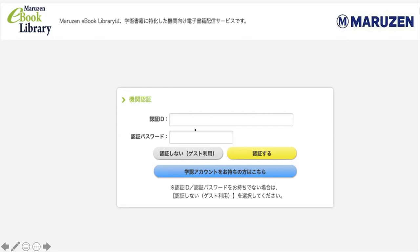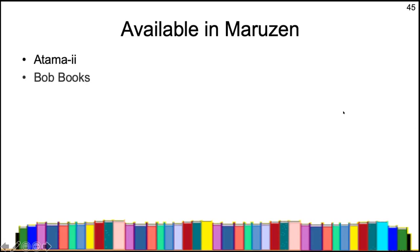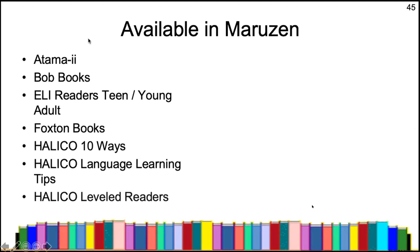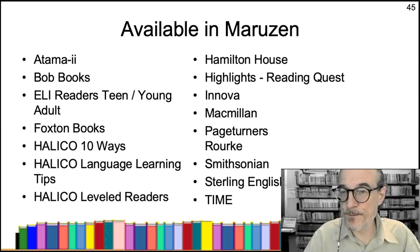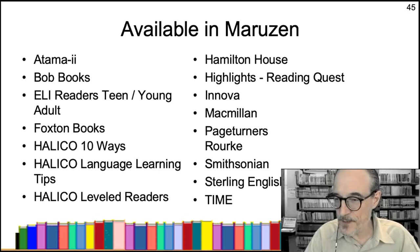If you can get X Reading for your students, that's definitely the easy way. If not — or indeed if you do want to get ebooks for students in general — these are the ways of doing it. This is a list of the graded readers available in Maruzen. Oxford books were not available in Maruzen; they were available in LiveLibrary.